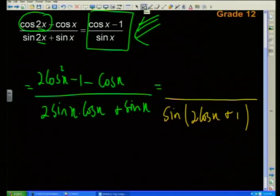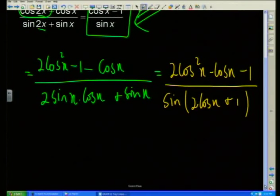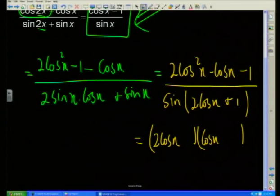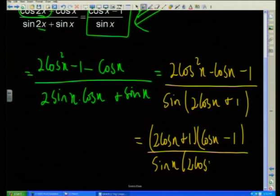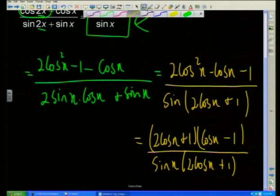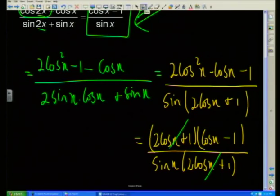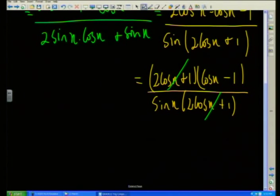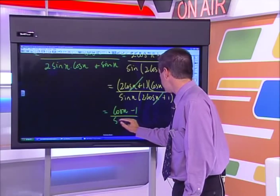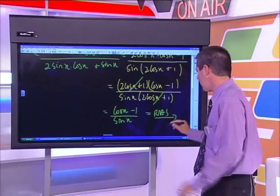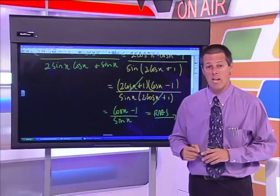The whole idea with algebraic fractions is to factorize. At the bottom I can see a common sine factor: sin(x)(2cos(x) + 1). Looking at the original question and where I'm at, I can see sin(x) at the bottom will eventually cancel. So I look for a common bracket of (2cos(x) + 1) at the top. Rearranging the top as a trinomial: 2cos²(x) − cos(x) − 1, which factorizes as (2cos(x) + 1)(cos(x) − 1).